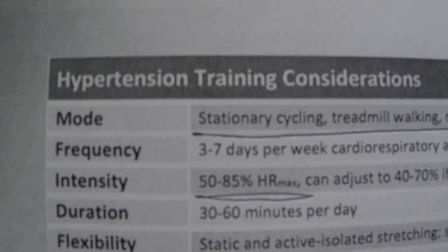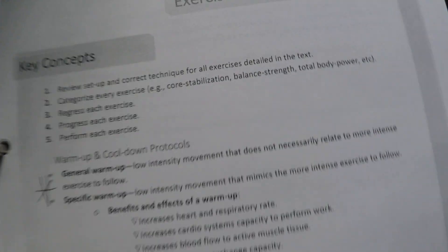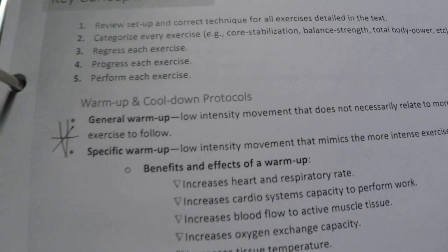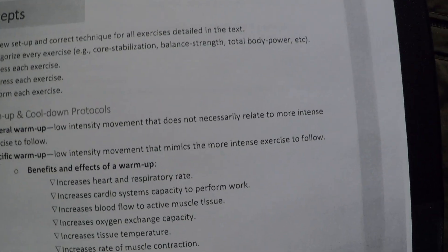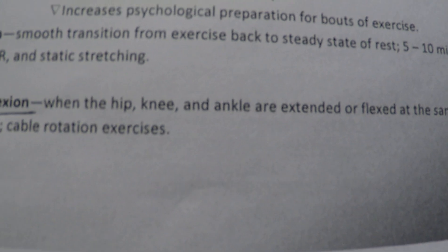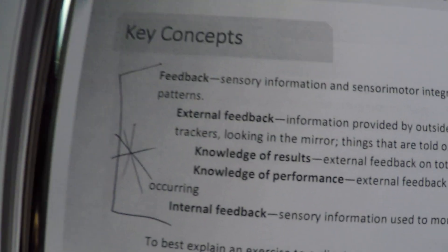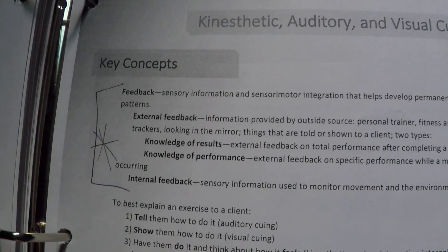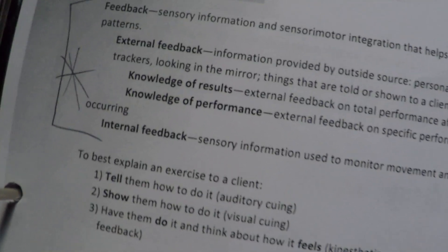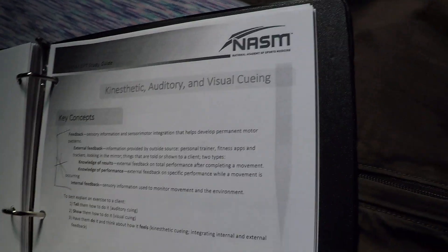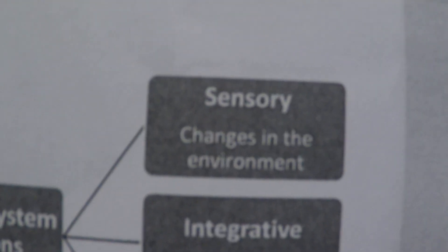Know what certain clients need - pregnant, obese, older clients - look through those. For hypertension, there may be a question about what intensity levels should be. General warm-up doesn't necessarily relate to the more intense exercise that follows, whereas a specific warm-up mimics the more intensive exercises following it. Triple extension and flexion is when the hip, knee, and ankle are extended or flexed at the same time. Know internal versus external feedback: external feedback comes from a trainer, app, or mirror; internal feedback is sensory information used to monitor movement.